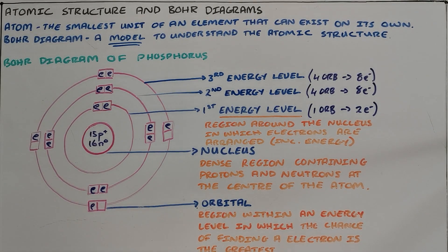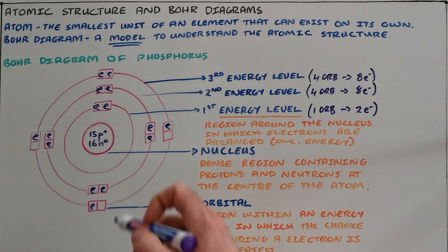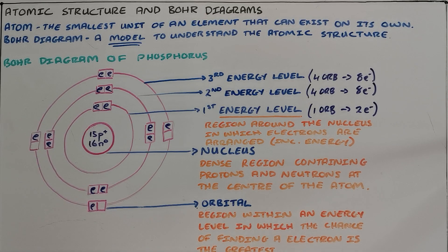It is possible for us to draw a fourth, fifth, sixth, seventh and eighth energy level. What we will find in those energy levels is that the number of orbitals and therefore the number of electrons increases. But in most scenarios, we only use up to the first 18 or first 20 elements and therefore only require three or sometimes four energy levels when drawing a Bohr diagram at school level.